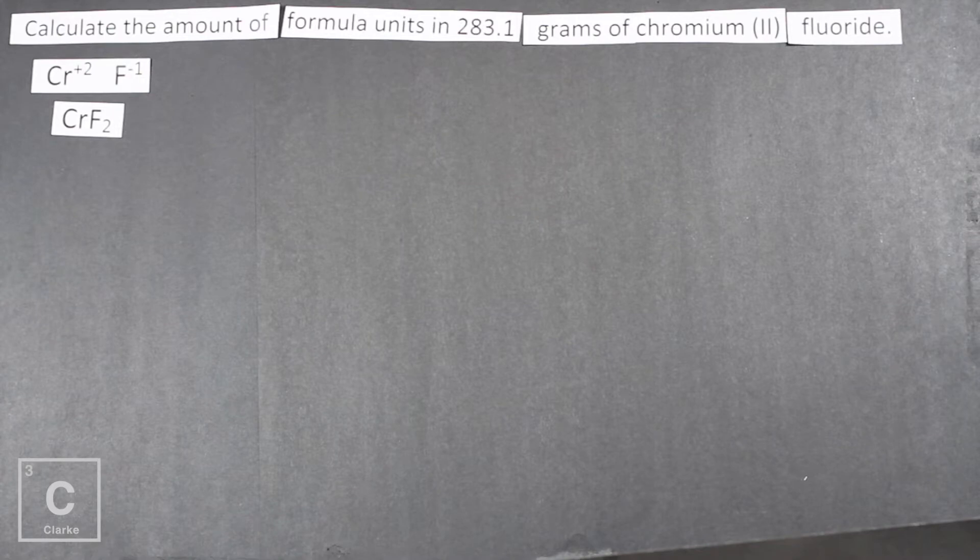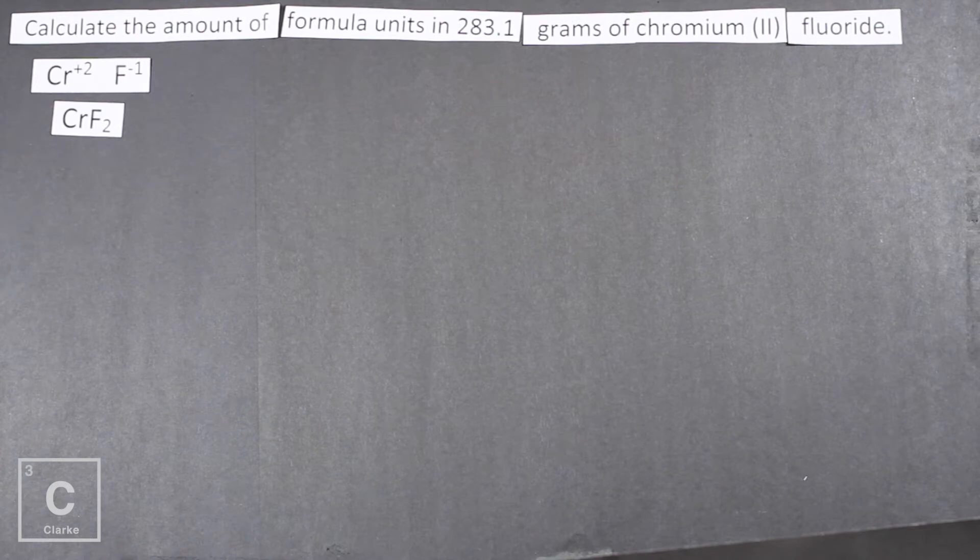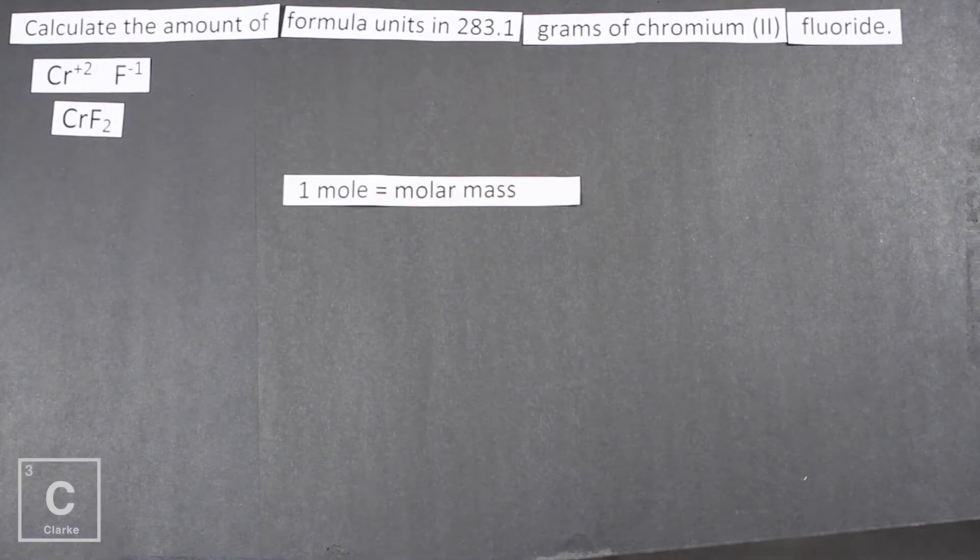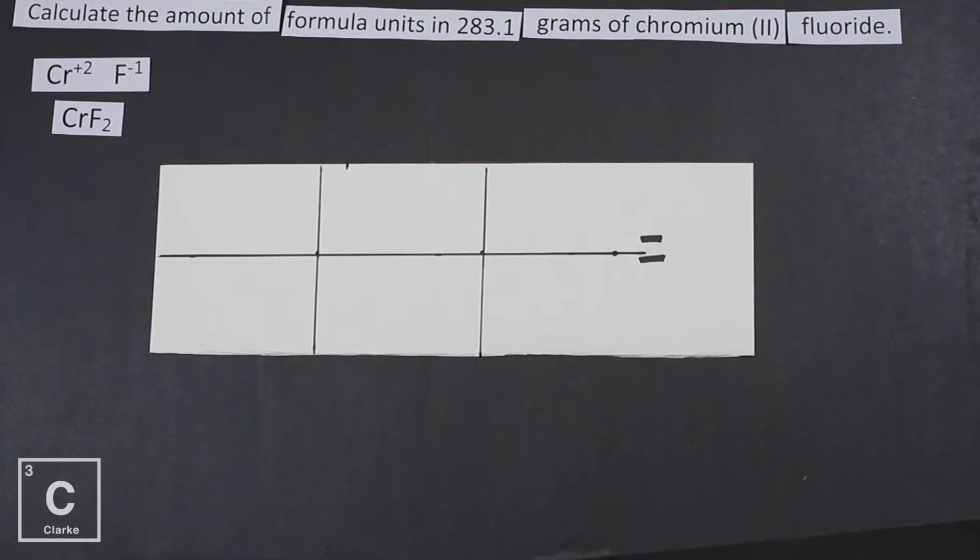So let's set this problem up. Before we do the dimensional analysis let's first calculate the molar mass, because remember one mole equals molar mass. Okay, so the molar mass of chromium (II) fluoride is just going to be 90 grams flat. We are going to need to use that in our problem. Okay, so let's use the train track method to do our dimensional analysis. And anytime we do dimensional analysis we always want to put our given on the top first. And if we refer back to our question our given is 283.1 grams of chromium (II) fluoride.